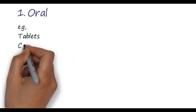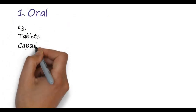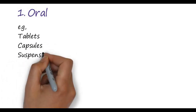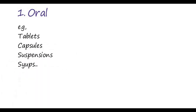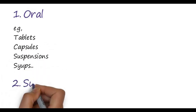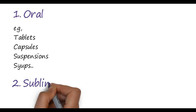In the oral route, the most common dosage forms are tablets, capsules, suspensions, or syrups. In the oral route, drugs are taken by means of the mouth and passed through the mouth, then the esophagus, then the stomach, with the final destination being the intestine.